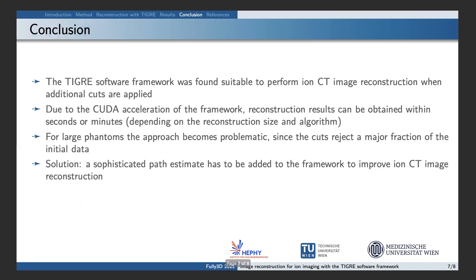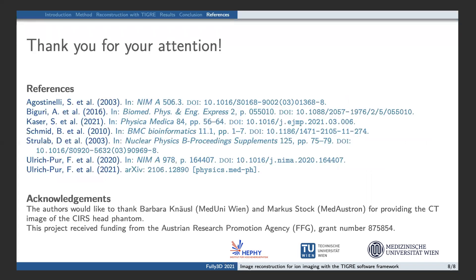To conclude, the TICRA framework was successfully used for ion CT image reconstruction. Due to its CUDA acceleration, image reconstruction is possible within seconds to minutes, depending on the phantom size and reconstruction algorithm. The data cuts we used were able to improve the reconstruction results. However, the data rejection rate strongly increases with phantom thickness. In order to further improve ion CT image reconstruction with TICRA, our goal is to implement a sophisticated path estimate to the framework. Thank you for your attention.